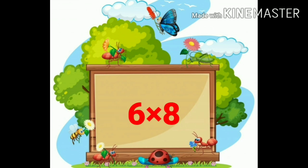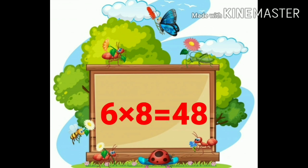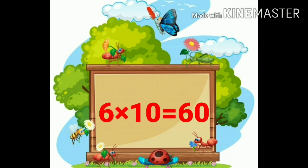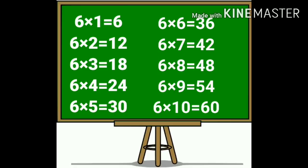Six eights are forty-eight. Six nines are fifty-four. Six tens are sixty. Again we learn the multiplication table of 6.